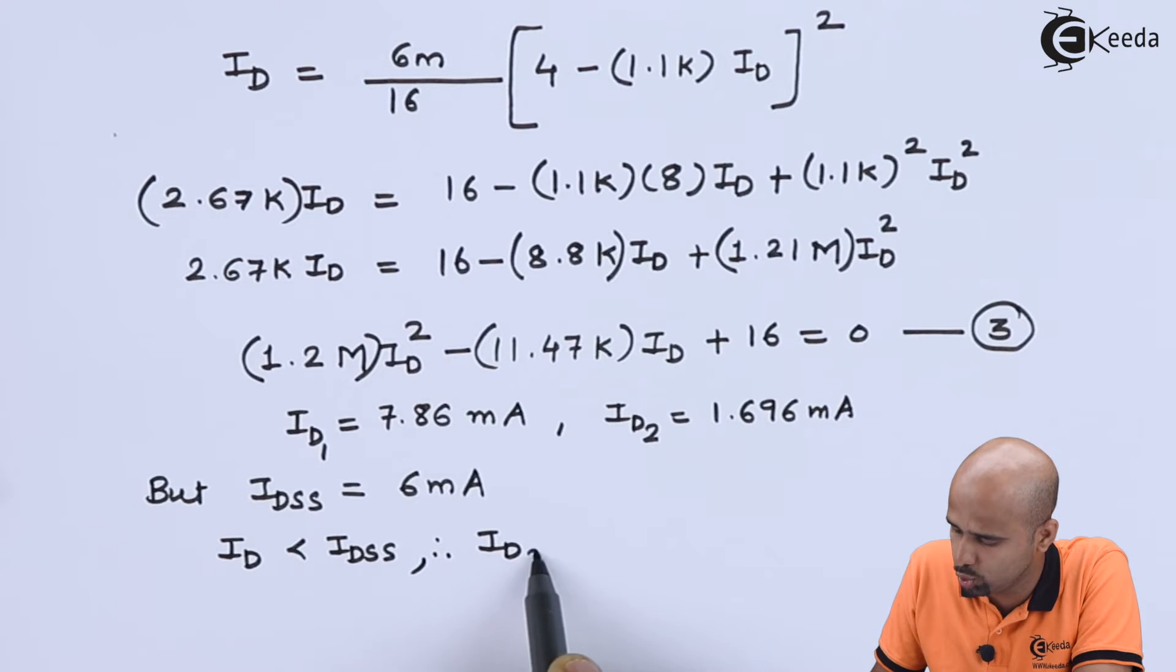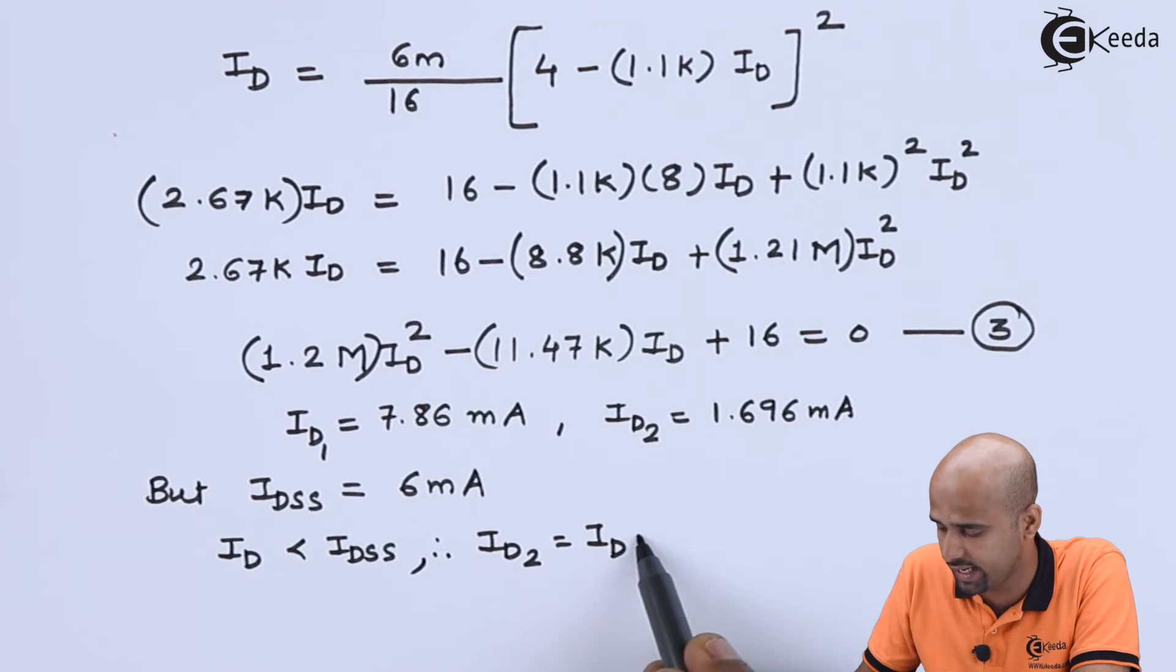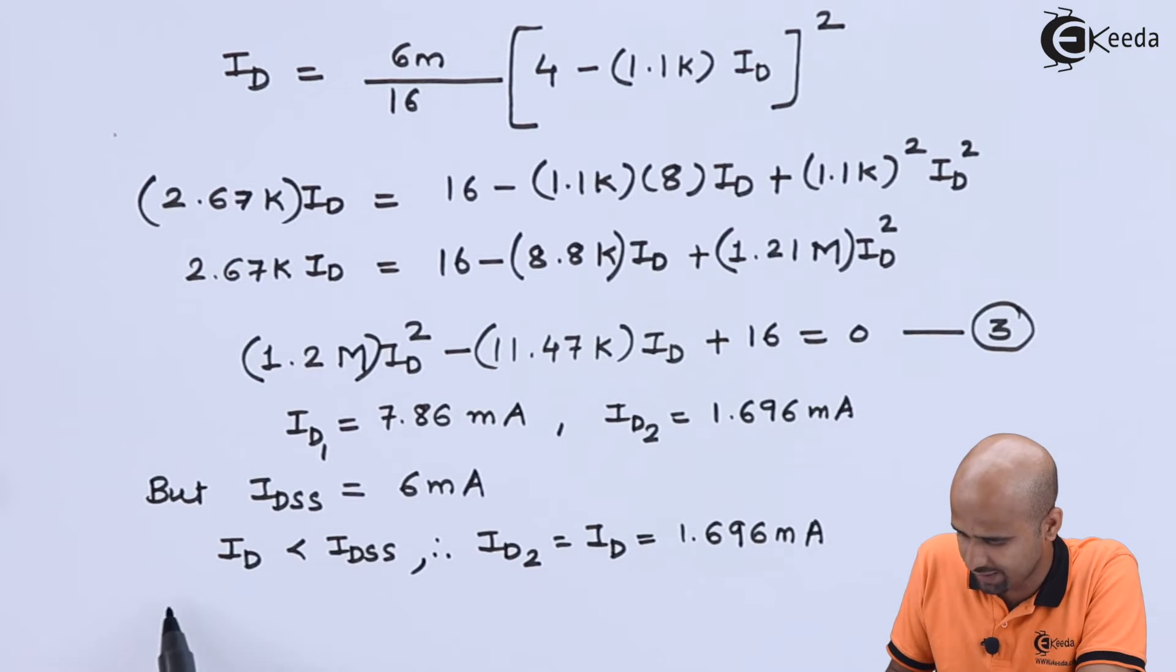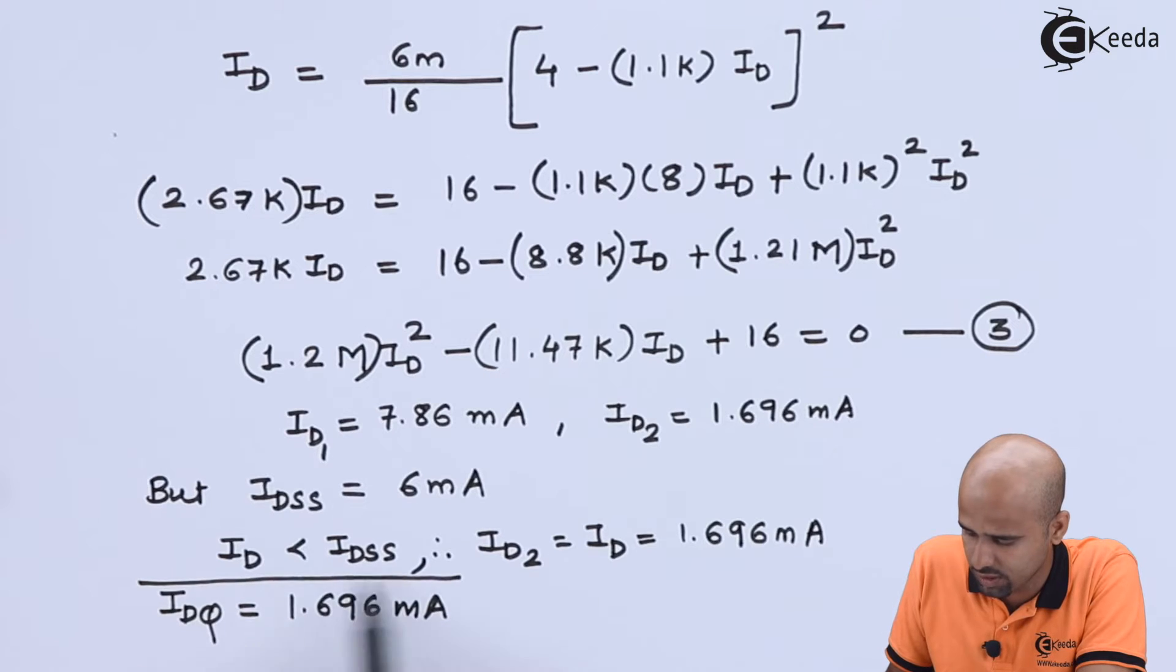And that is why ID2. Hence, ID2 is equal to ID. We will select the second ID as Q parameter. So we have got the IDQ is equal to 1.696 milliampere. That is the first finding from this numerical.